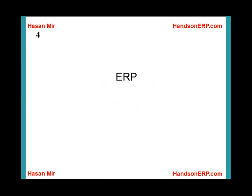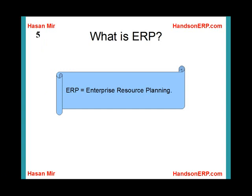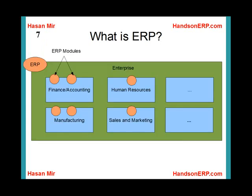Let's start with ERP. ERP stands for Enterprise Resource Planning. ERP is a special category of software that manages your whole enterprise. A company typically consists of departments, and each department would need some kind of software to manage its information. So ERP would consist of different modules — each department would be using one or two modules of the ERP software to manage its end-to-end solution.